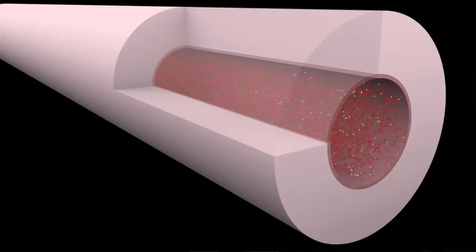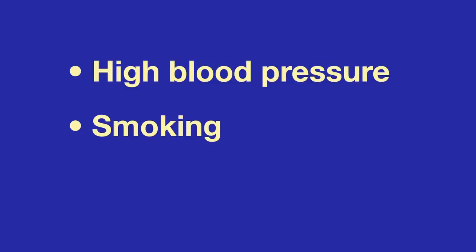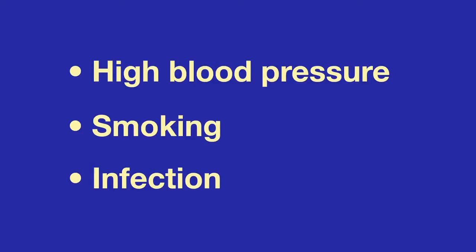Atherosclerosis begins when something injures the inner lining of the artery. There are many possible causes of injury. High blood pressure is one, so is smoking. Infection may be another.